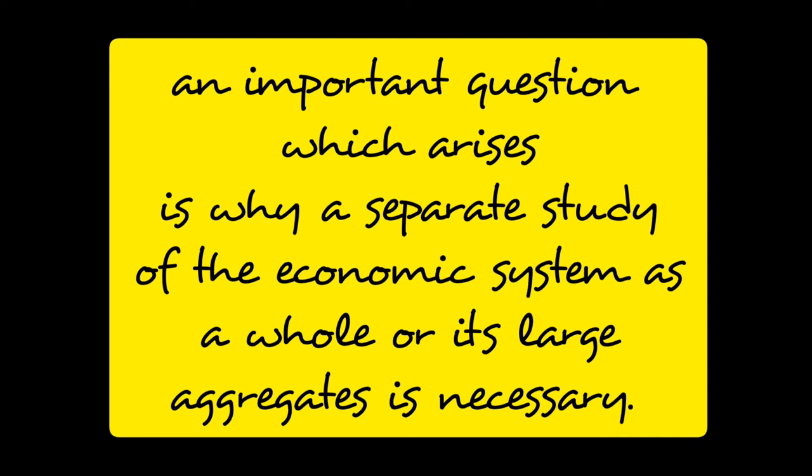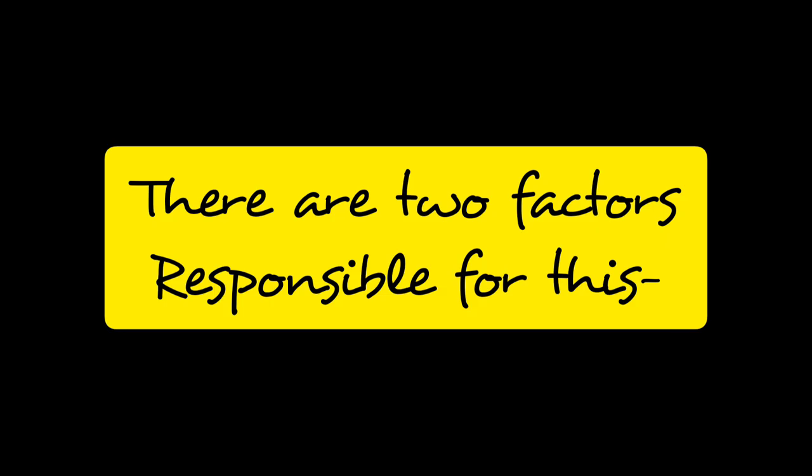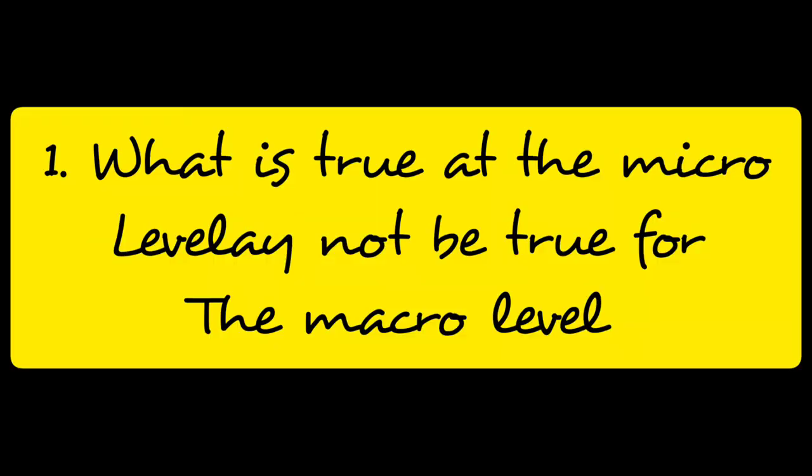The first reason is that what is true at the micro level may not be true at the macro level. Sometimes there are situations which can be true at the micro level, but if we apply the same situation to macroeconomics, it may not hold. For example, saving is a social virtue at the level of an individual, as it increases future prosperity.